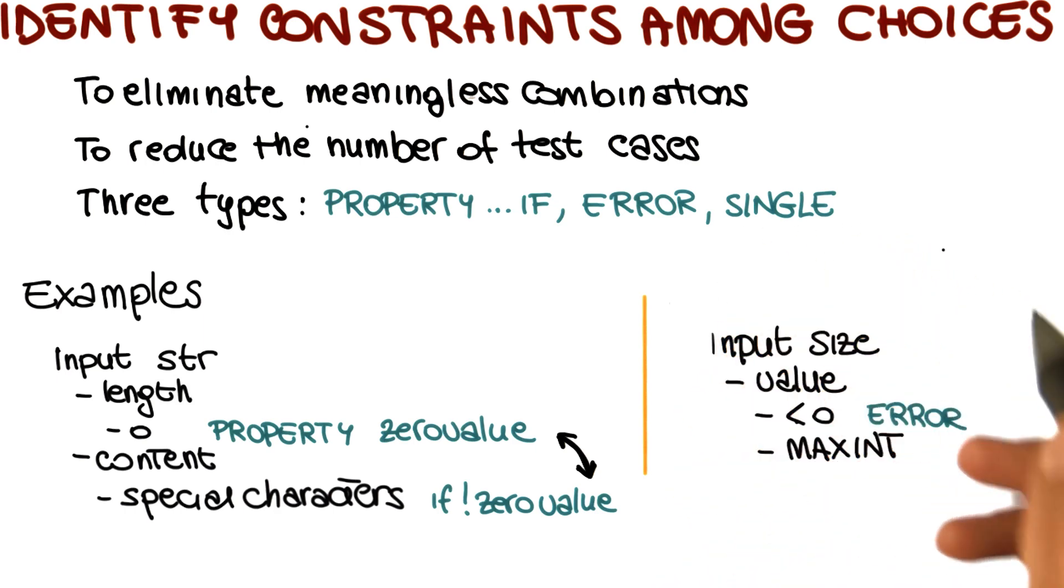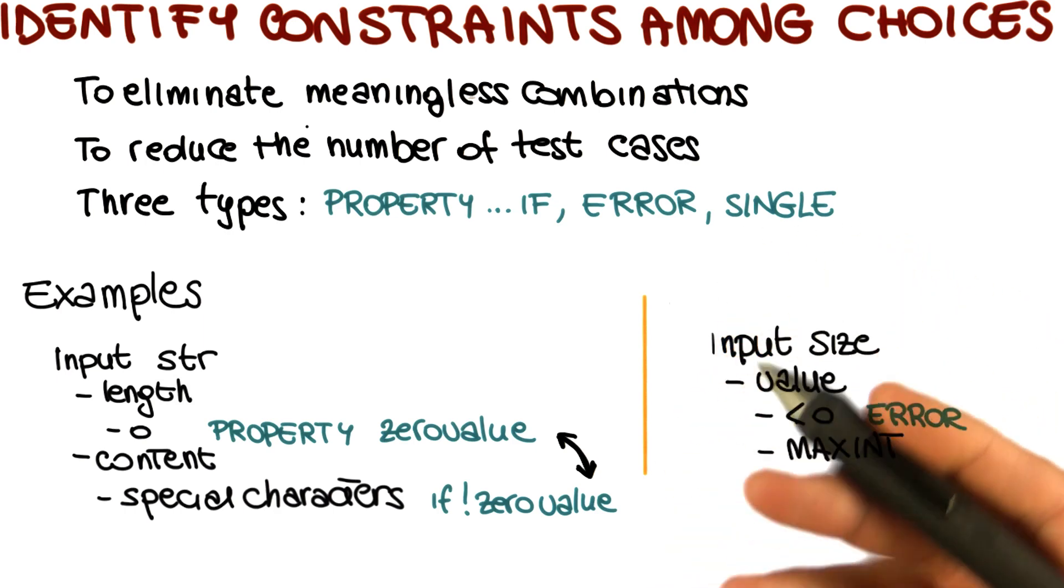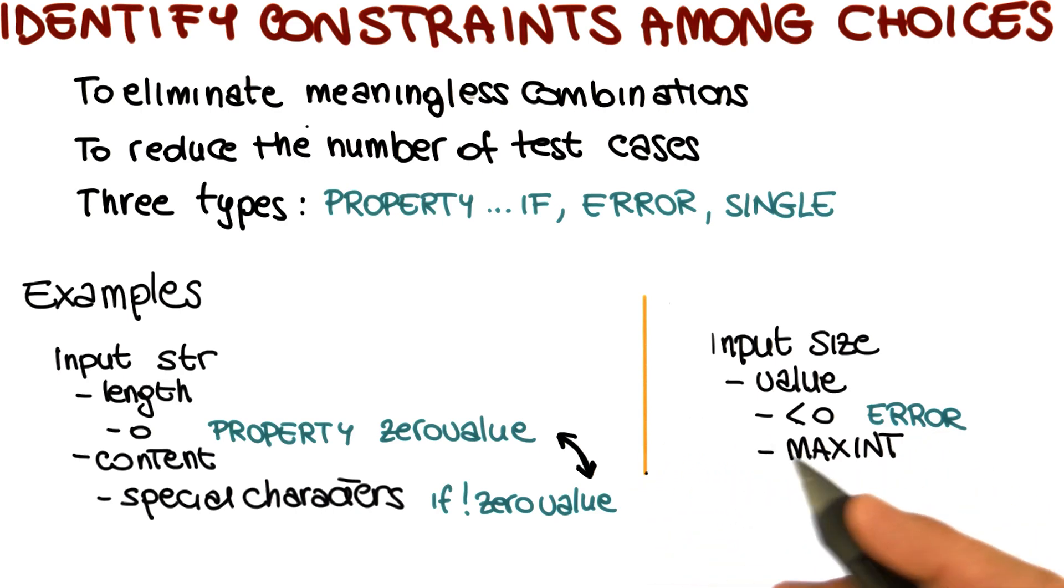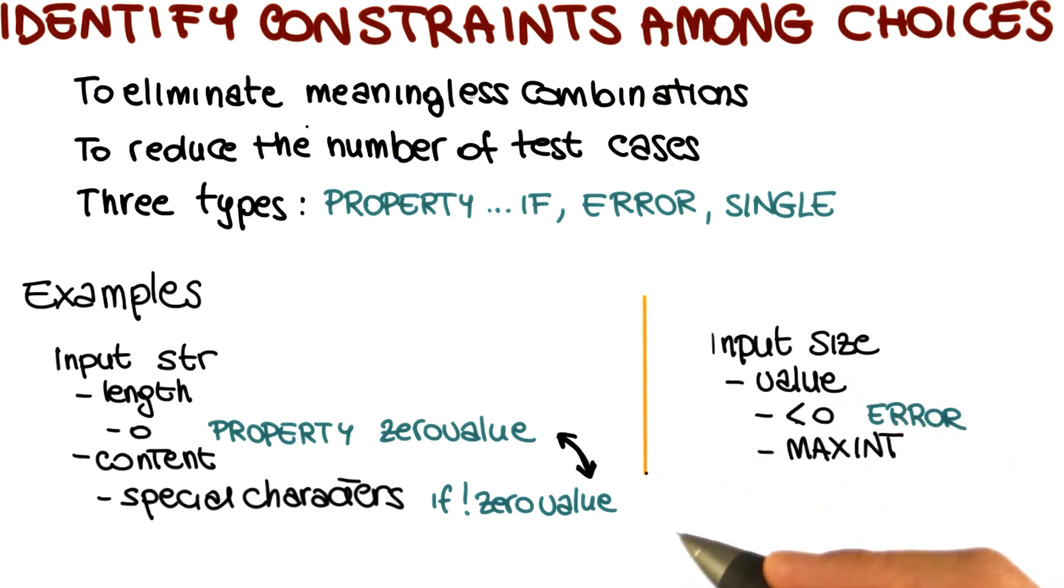Finally, the single property is a property we use when we want to limit the number of test cases. It's similar in effect to error, it just has a different meaning. When we use the single property, we're saying this choice we want to use in only one combination. Don't combine it multiple times. That, of course, given the combinatorial nature of the problem,